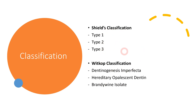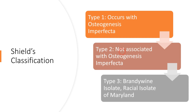In the Shields classification: Type 1 dentinogenesis imperfecta is associated with osteogenesis imperfecta. Type 2 is not associated with osteogenesis imperfecta — that is the major difference between the two. Type 3 is a rare racial isolate of Maryland, called the Brandywine isolate. These are the three types in the Shields classification most commonly used.